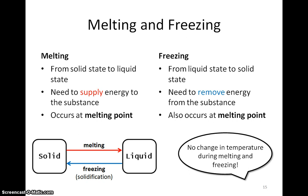For example, pure water freezes at 0 degrees Celsius to form ice, while pure ice melts at 0 degrees Celsius to form water. In other words, the freezing point for water is 0 degrees Celsius, while the melting point for ice is also 0 degrees Celsius. In general, the freezing point of a substance is the same as the melting point of the substance. Note that water gives out thermal energy when it freezes or solidifies, while ice takes in thermal energy when it melts.